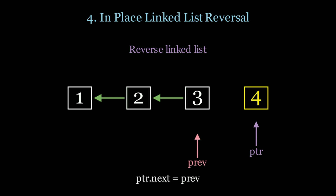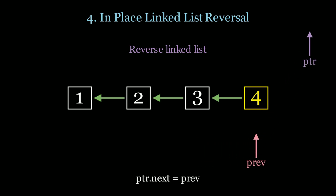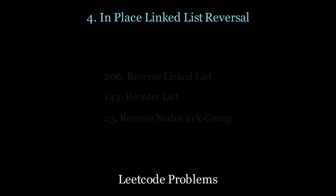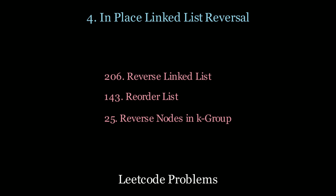At the end of the iteration, the previous pointer will point to the new head of the reversed list. This runs in O(n) time and constant space since we only use two variables. If you want more practice, solve the following LeetCode questions.